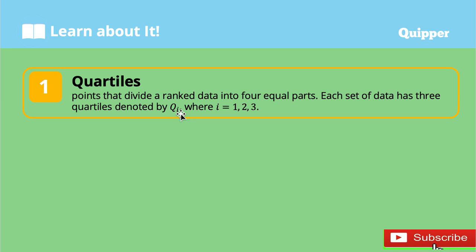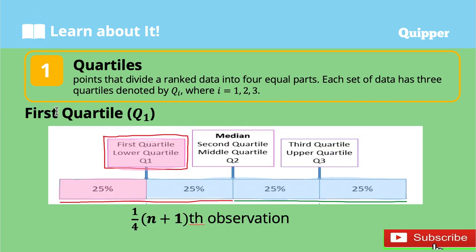So we have the first quartile, second quartile, and third quartile. The first quartile, or Q sub 1, is a number such that 25% of the data are smaller compared to the value of the first quartile, and 75% are larger. It represents the middle value of all values to the left of the median.